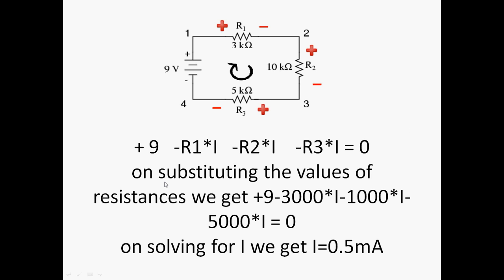On substituting the values of resistances, we get the resulting equation. On solving for the value of current, we get I = 0.5 mA, which is the same as that obtained by Ohm's law.